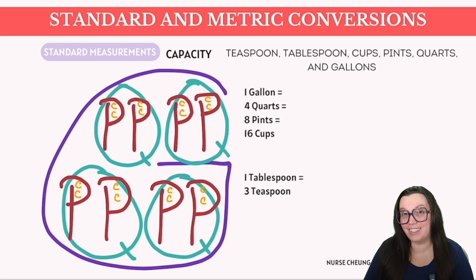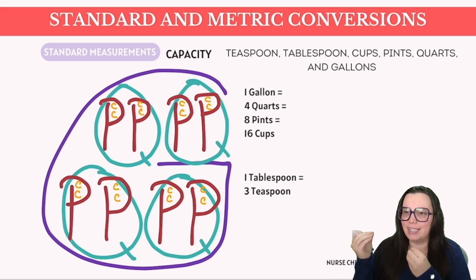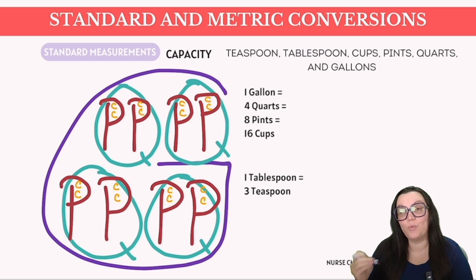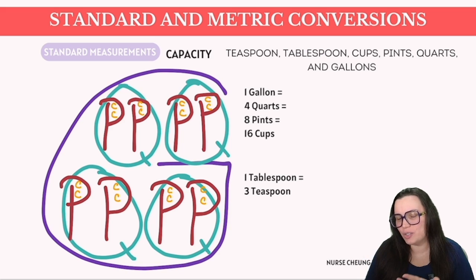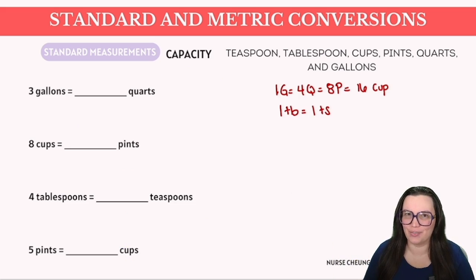This means one gallon equals four quarts equals eight pints equals 16 cups. Another important concept that doesn't fit the Big G mnemonic: one tablespoon is equal to three teaspoons — you'll need to memorize that one.